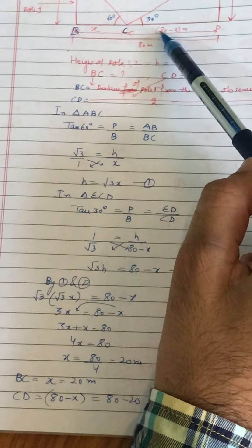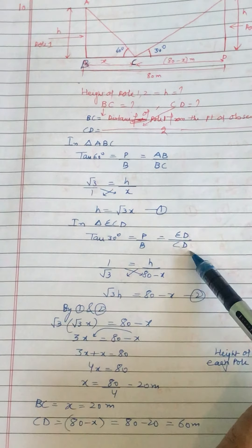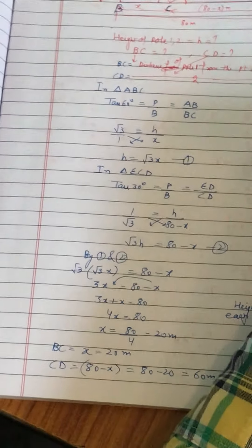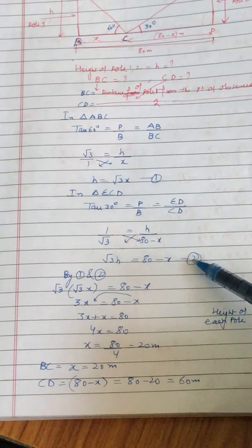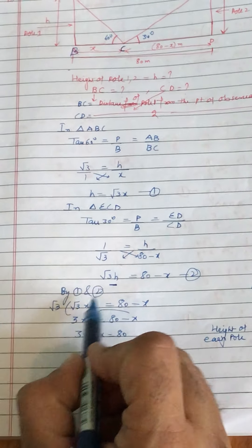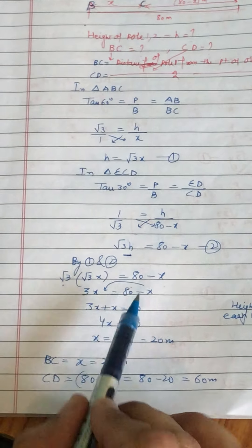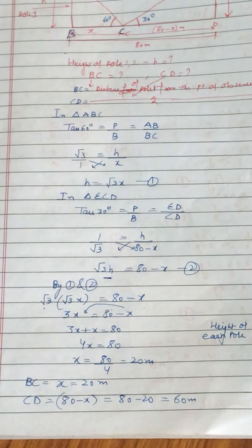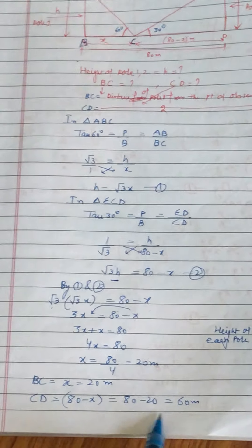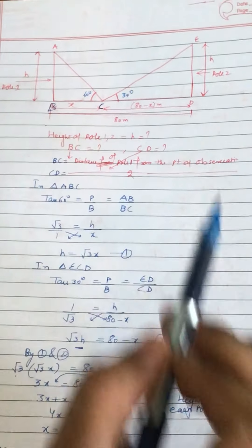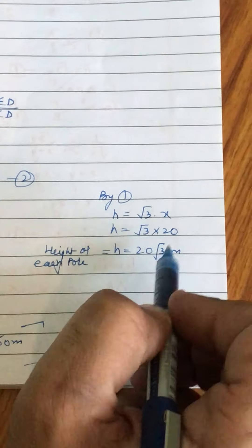Equation 1 aur 2 ko compare kijiye, aur H ki jagah root 3x rakh dijiye. Root 3 into root 3x equal to 80 minus x. Root 3 into root 3 is 3: 3x equal to 80 minus x. 4x equal to 80, x equal to 20 meter. So BC hamaara 20 meter aur CD = 80 minus 20 = 60 meter. Ab H nikaalte hain — H was root 3x, x ki jagah 20 put kijiye, H aajayega 20 root 3 meter. So this was question number 10.